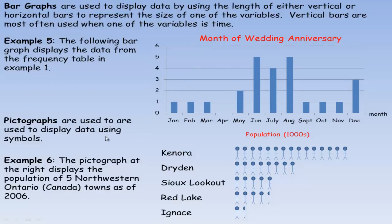Pictographs are used to display data using symbols. In this example, we've got the population data from 2006 for five northwestern Ontario towns: Kenora, Dryden, Sioux Lookout, Red Lake, and Ignace. The population is in thousands. Each of these people symbols means a thousand. For Kenora, if we count, that's one, two, three, four, five, six, seven, eight, nine, ten, eleven, twelve, thirteen, fourteen, fifteen. That means Kenora's population is about fifteen thousand. Dryden has eight symbols, so Dryden's population would be around eight thousand in 2006. Sioux Lookout is about five thousand.